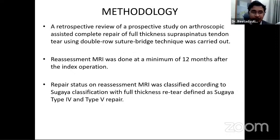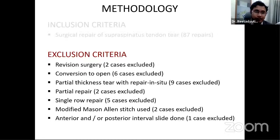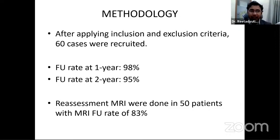This was a retrospective analysis primarily from training years plus data from colleagues. Reassessment MRI was classified using Sugaya's classification of re-tear. Exclusion criteria included revision surgeries, open conversions; only fully arthroscopic repairs were included. After applying all criteria, approximately 60 patients were selected with 98% one-year follow-up; 50 agreed to undergo MRI. Margin convergence was done in about 10 of the 50 patients.